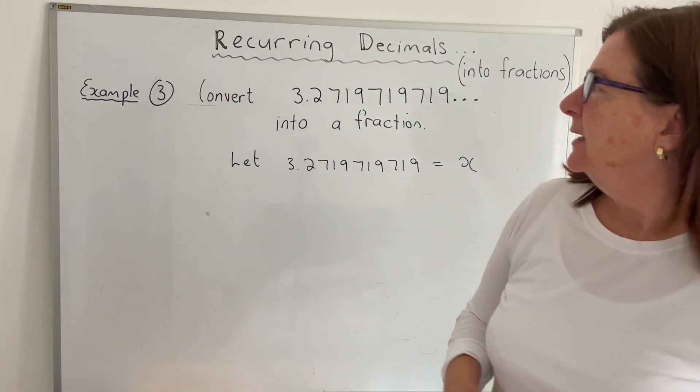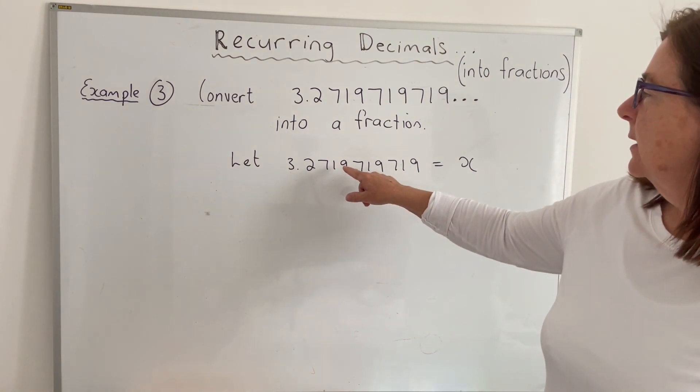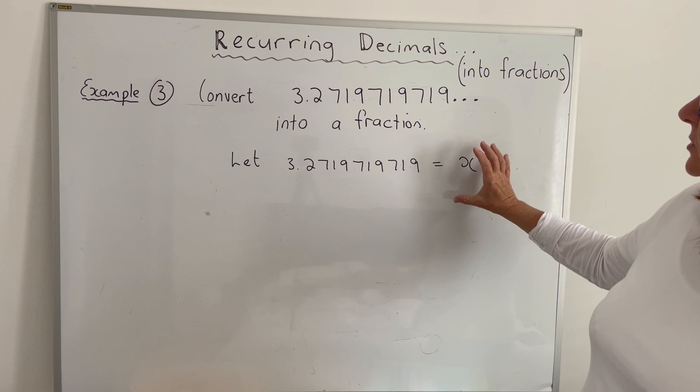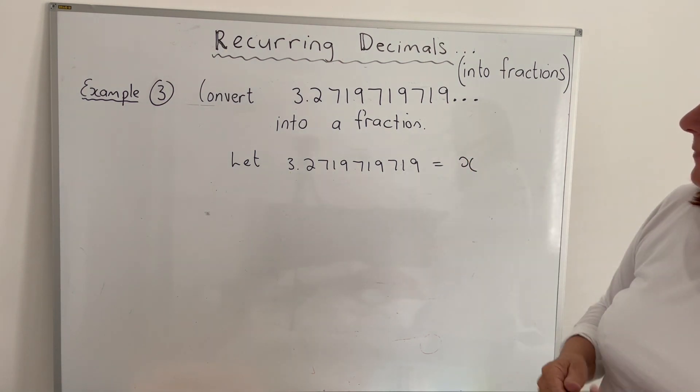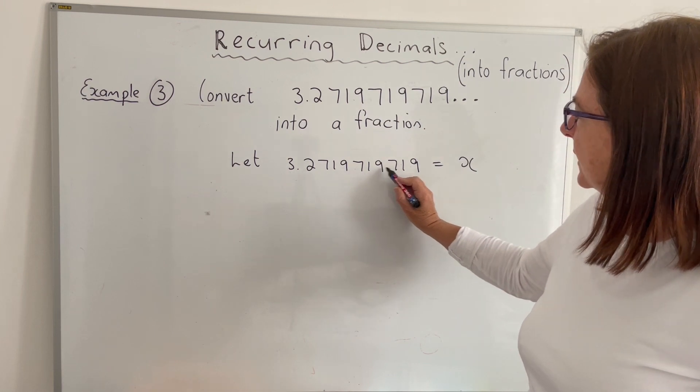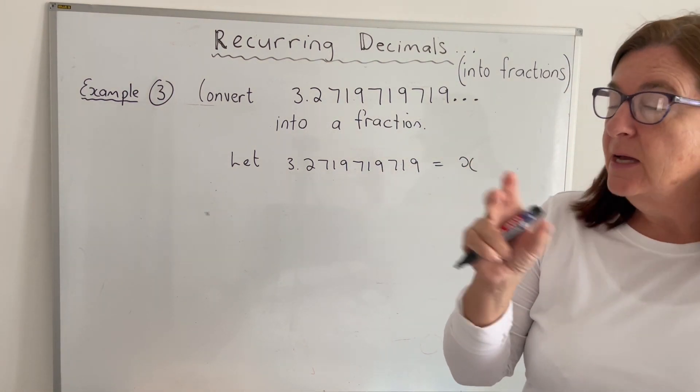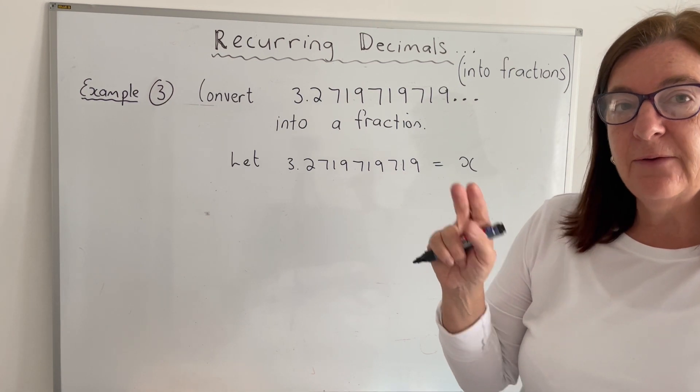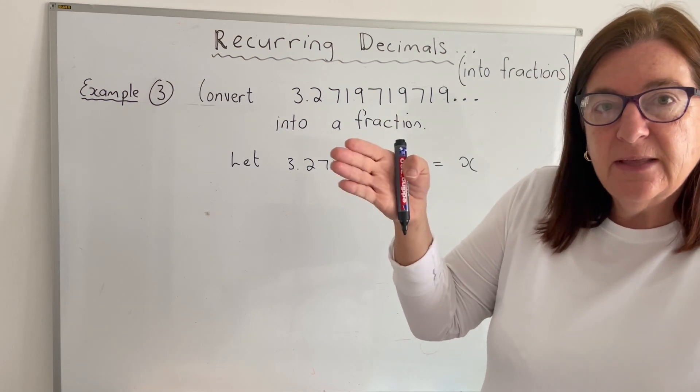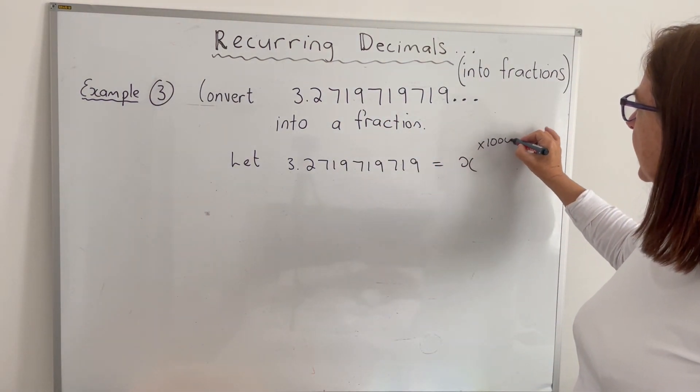One more example. For our third example, let 3.2719719719 equal x. Remember that's always our starting point. Now the recurring decimals here are 719719719, so there are three that are recurring. And if that's the case, don't multiply it by 100, I've got to multiply it by 1000 because essentially I want to get rid of those recurring decimals and there's three of them. So I've got to multiply both sides by 1000.